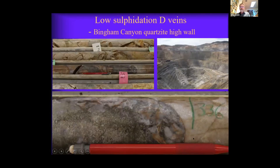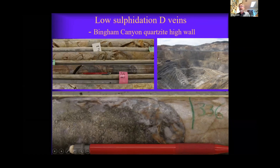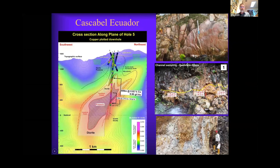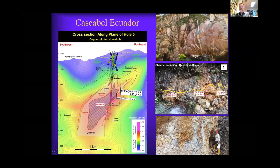D veins form in the wall rocks. This is a D vein in the high wall on the margin of Bingham Canyon and comprises pyrite and quartz. If the porphyry wasn't there, you might regard this as a vector towards mineralisation — just as SolGold have used in a presentation. Steve Garland pointed out how the presence of outcropping D veins with sericite selvages were important in the exploration history leading to the discovery of the Alpala porphyry at Cascabel.